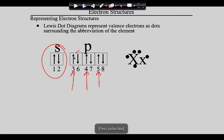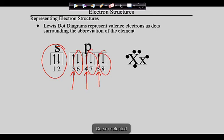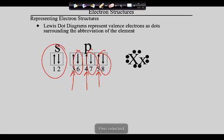Electrons 3, 4, and 5 went unpaired in the P's, so similarly in the dot structure they go unpaired in the three remaining positions. Then electrons 6, 7, and 8 pair up as they had to in the boxes. So the pattern is: one and two pair up, then three, four, and five go unpaired, then six, seven, and eight pair up.